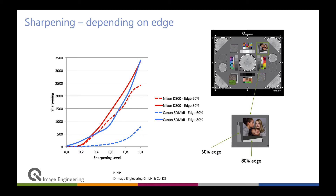Here is an example of how this can be useful. We compare a Nikon and a Canon camera, looking at how different sharpening levels show different measured sharpening amounts on a high contrast versus a low contrast edge. The Nikon has very similar results for high and low contrast, while the Canon makes a huge difference between them. From just a bunch of images, we can learn a lot about the image processing of these cameras.